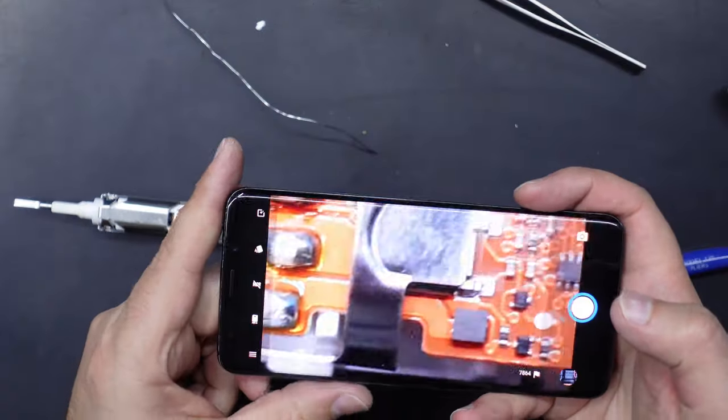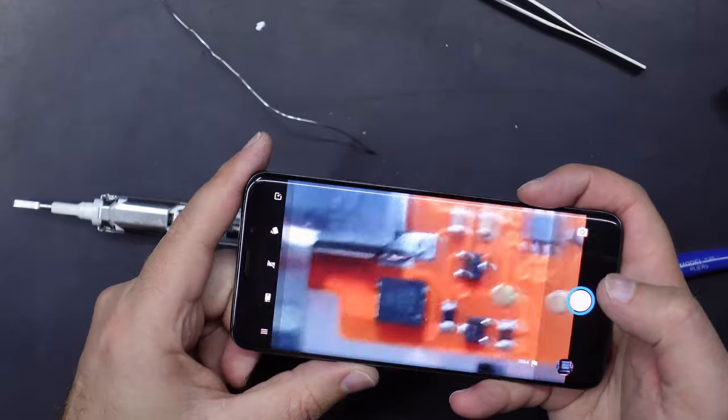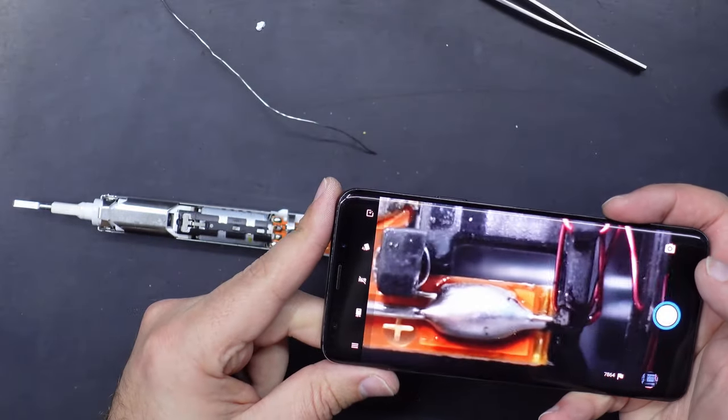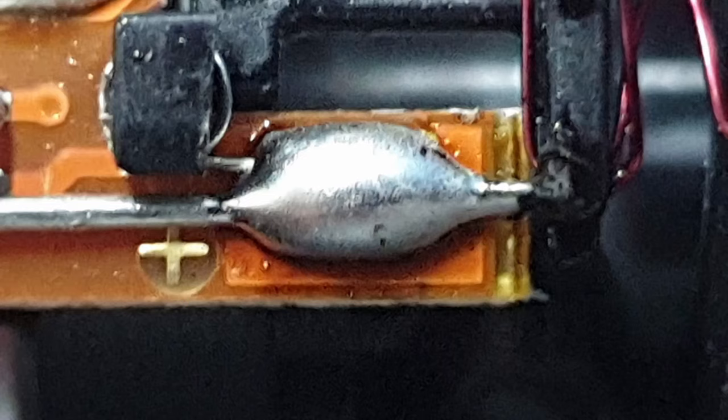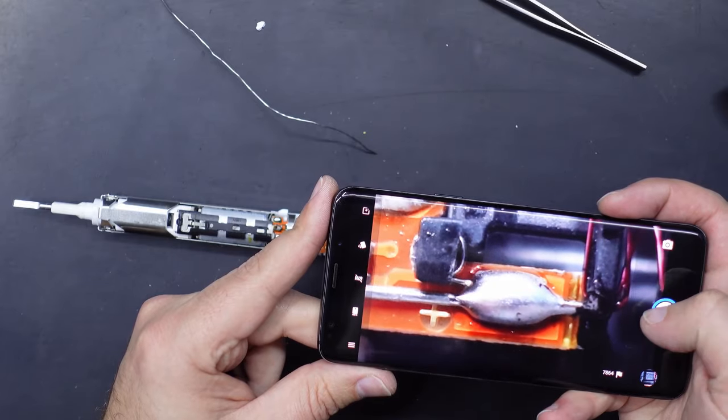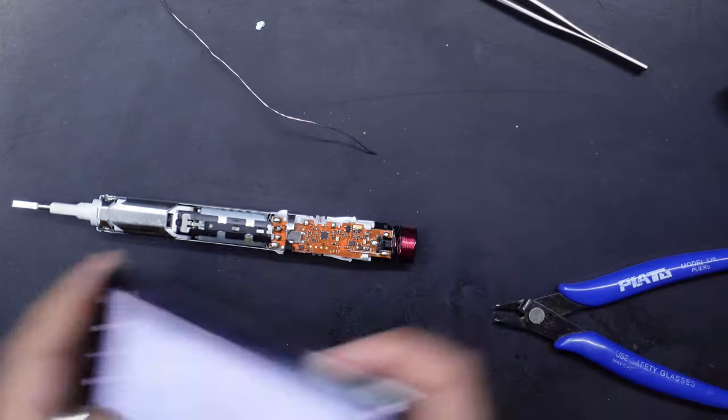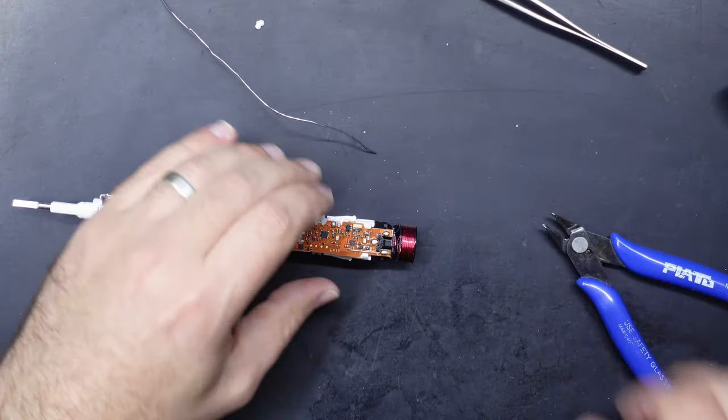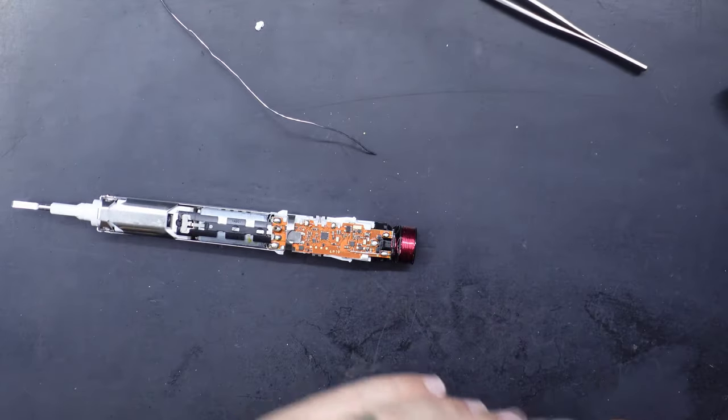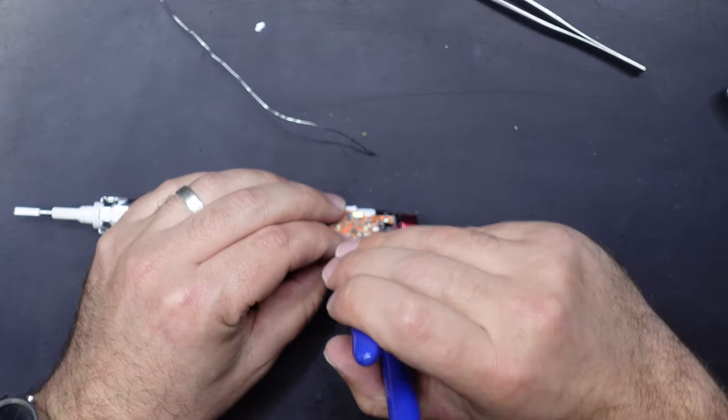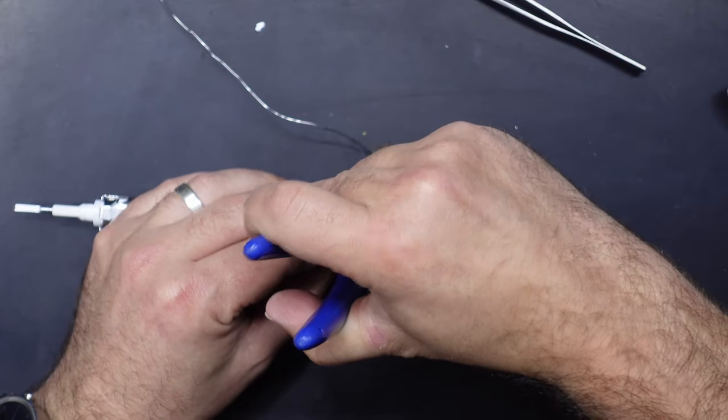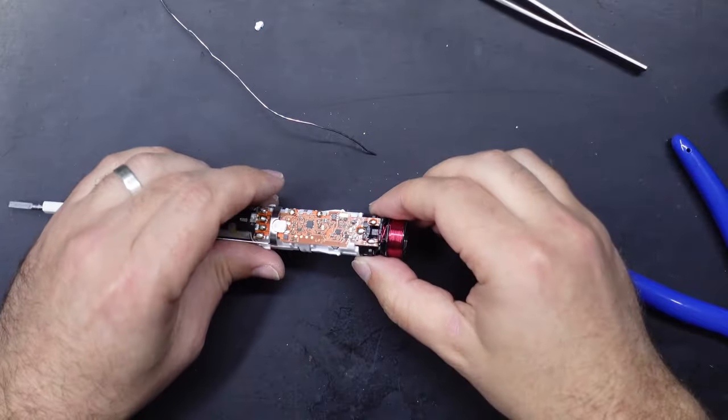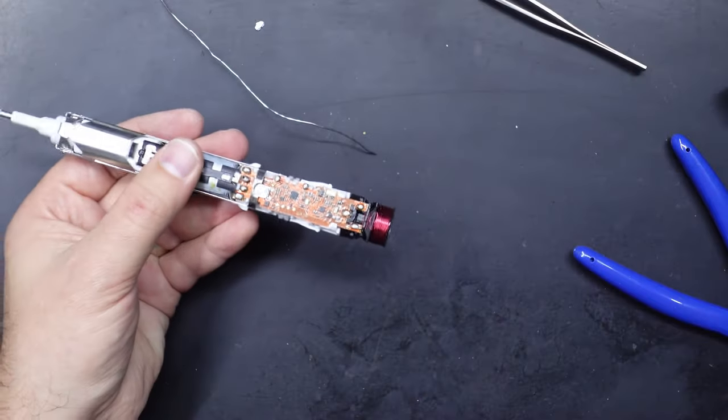All right, let's have another look. So it appears that that is now reconnected. Easiest way to find out is to test it. I'm just going to cut off the rest of this extra leg otherwise it's going to short to something else. That should be fine, let's test this out.